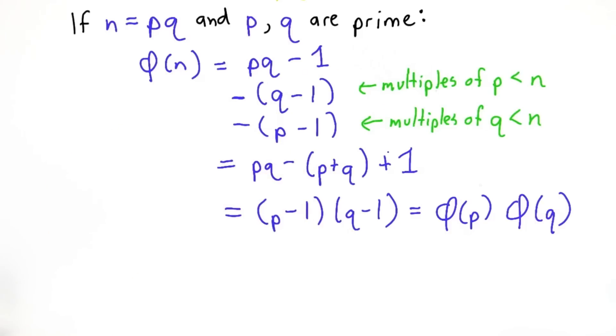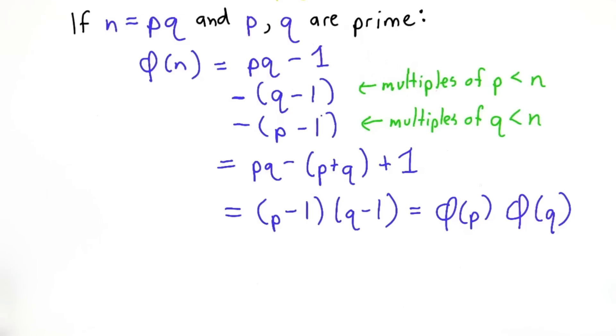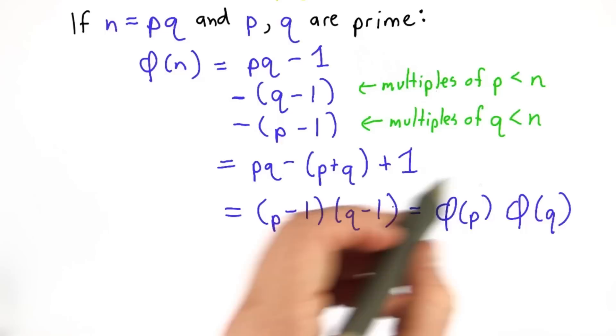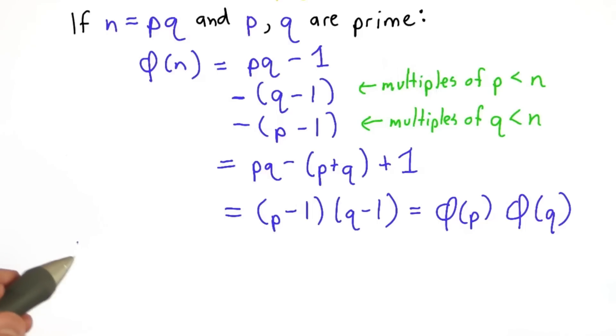this property depends on p and q being prime, otherwise some of these multiples might have collided. Since they're prime, we know they didn't. That means the totient of n equals the totient of p times the totient of q. This is going to be very useful for RSA.